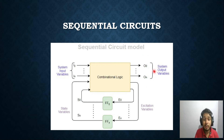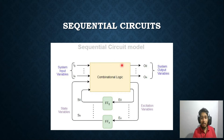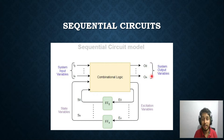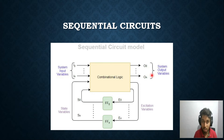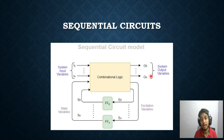The output of the system can be a function of both the system inputs and the state variables. Depending on how this output is generated, we classify sequential circuits into two types: the Mealy machine model and the Moore machine model. Remember, these are models — any system can be modeled as either a Mealy model or a Moore model.